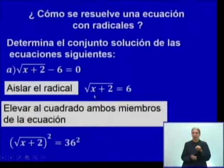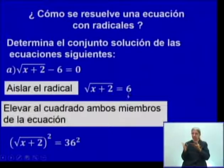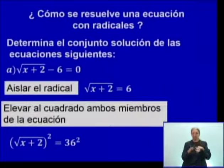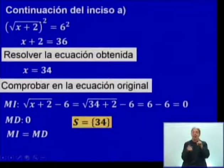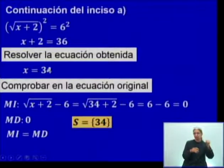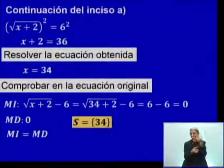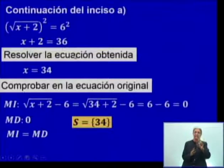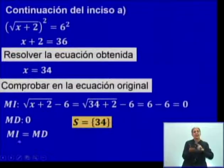Aquí hubo un error: si vamos a elevar al cuadrado ambos miembros, elevar al cuadrado aquí me daría la expresión. Dice 36, realmente 6 al cuadrado y el resultado es 36. Continuamos: elevado al cuadrado, cuadrado de 6 es 36. Ahora vamos a resolver esta ecuación lineal que hemos obtenido. Por tanto, nos da X igual a 32. Como dijimos antes, esa transformación puede ocasionar raíces extrañas, por tanto tenemos que comprobar. Sustituyendo miembro a miembro, obtenemos miembro izquierdo igual a 0 y miembro derecho igual a 0. Como los dos miembros obtienen el mismo resultado, el conjunto solución de esa ecuación es {32}.